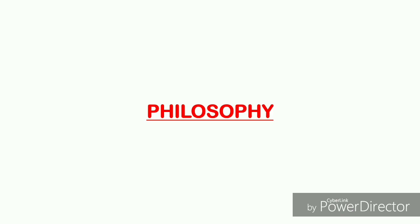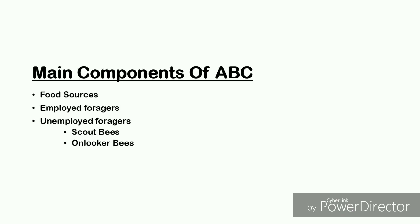Now we are going to discuss the philosophy of ABC. The main components are: Food Sources, Employed Foragers, and Unemployed Foragers, which includes Scout Bees and Onlooker Bees.